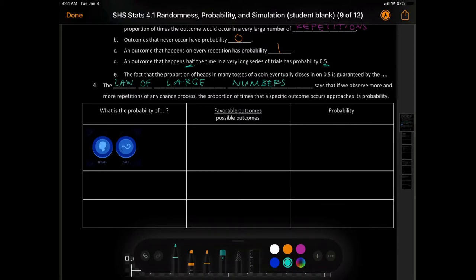It says that if we observe more and more repetitions of any chance process, the proportion of times that a specific outcome occurs approaches its probability. Alright, so this box is what is the probability. This one tells us it's a fraction. Favorable outcomes over possible outcomes or all. Part over whole, right? That's what a fraction is.